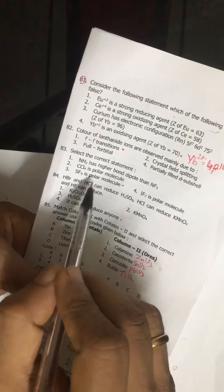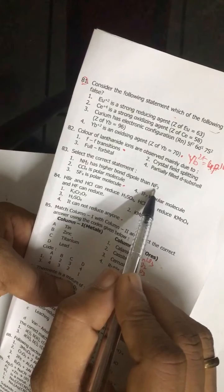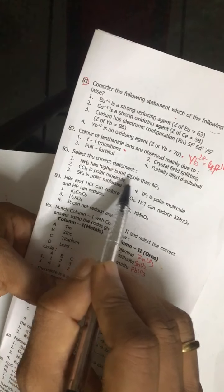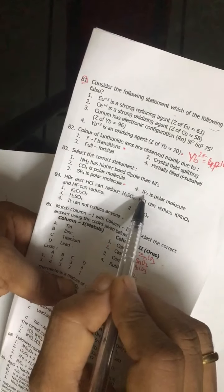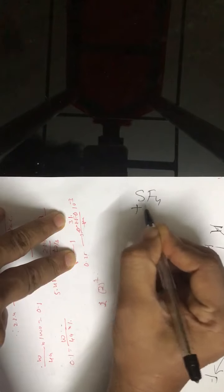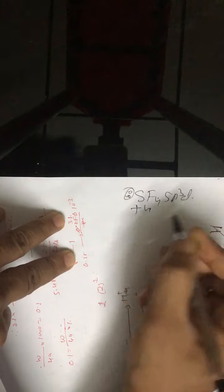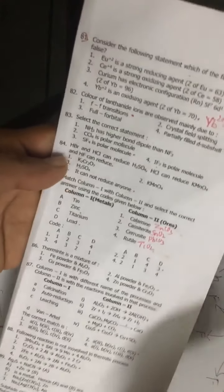First statement is correct: NH3 has a higher bond dipole than NF3 - what is talking about a bond dipole means polarity of a bond. CCl4 is a polar molecule - this is wrong. IF7 is a polar molecule - this is wrong. SF4 is polar molecule - this is correct. SF4 is plus 4, 4 plus 1, 5: sp3d, sp3d means it is V-shaped - in this pyramid means a seesaw shape. So the statement is correct.